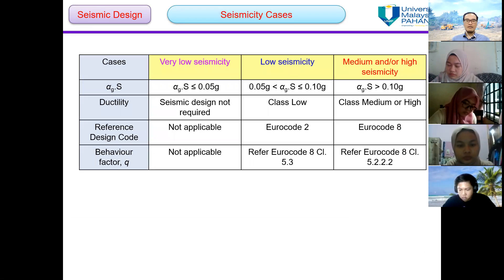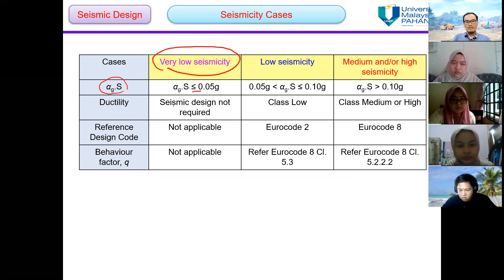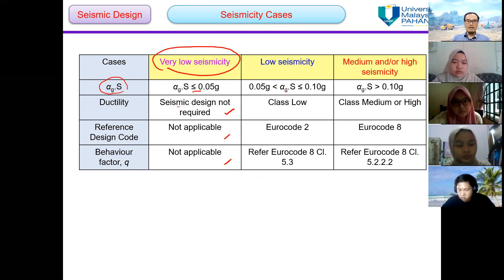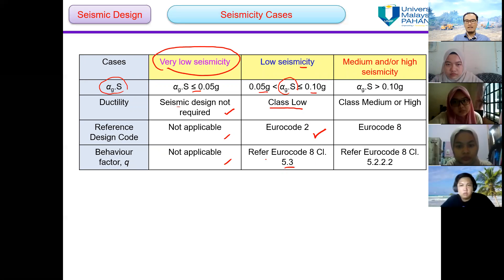We can simplify all that in this table. If alpha G times S is less than or equal to 0.05g, it is under the category of very low seismicity and seismic design is not required — we don't have to refer to Eurocode 8 and no behavior factor is involved. If the product of alpha G times S is greater than 0.05g but less than or equal to 0.1g, it is under the category of low seismicity. We propose ductility class low, refer to Eurocode 2 for design, and the behavior factor is from clause 4.3 of Eurocode 8.